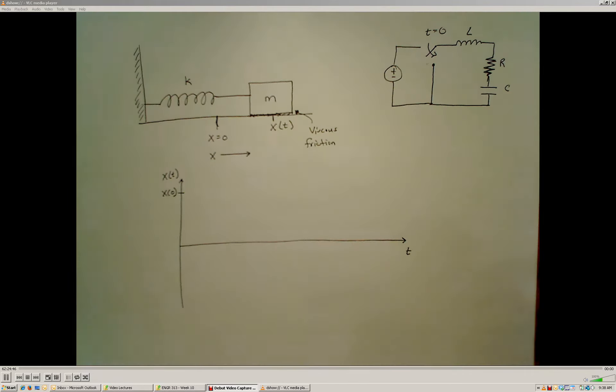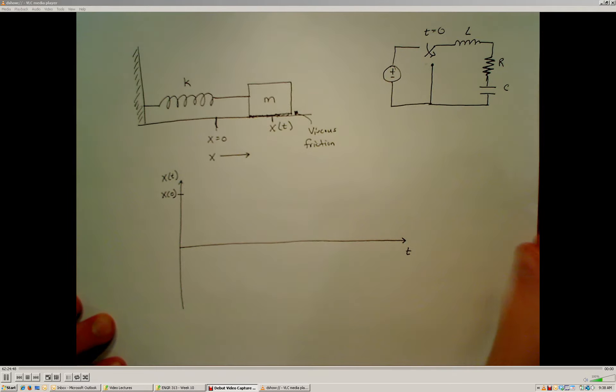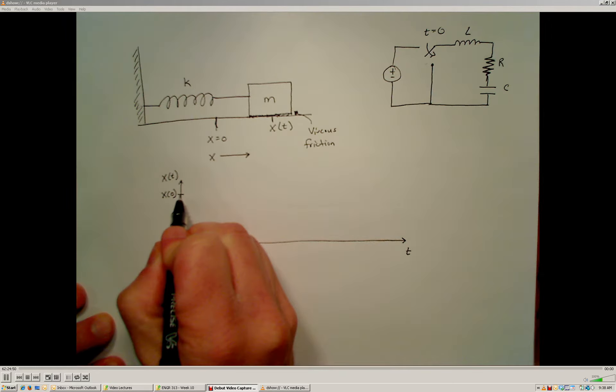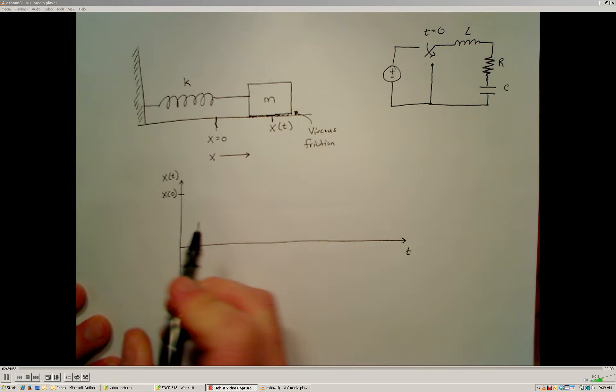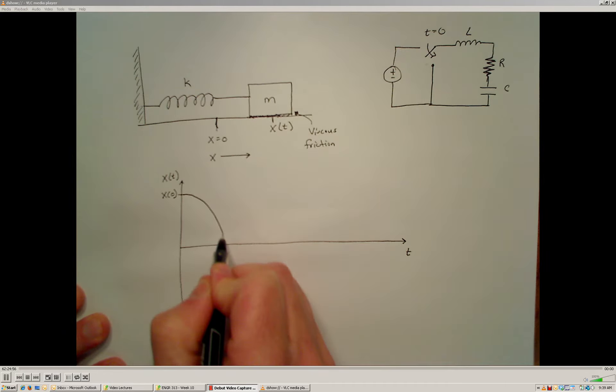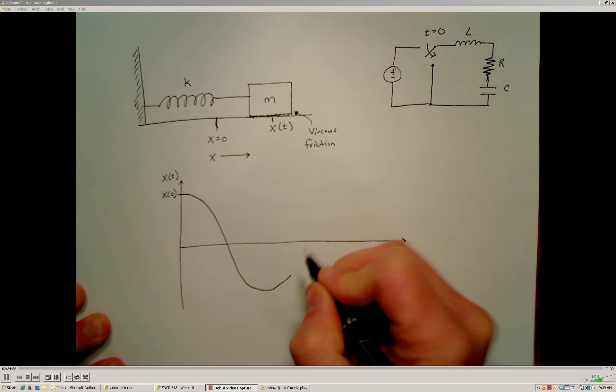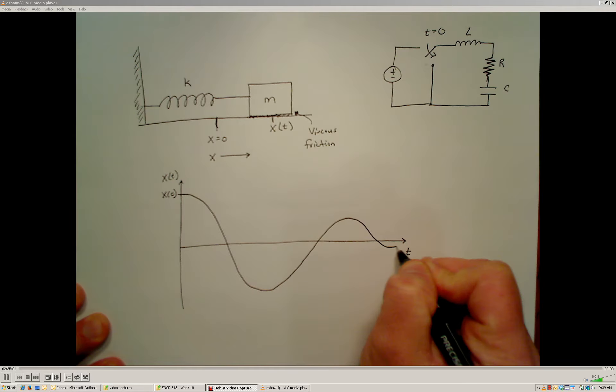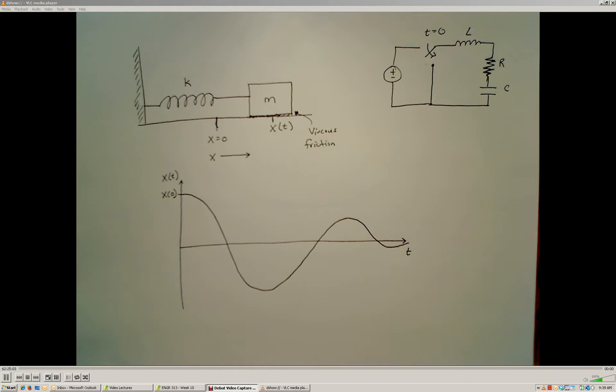From our experience with springs and masses, we would expect some type of oscillatory behavior where the mass is going to bounce back and forth around the equilibrium position until the viscous friction dissipates all the energy that's associated with that initial displacement. If I were to plot that on a graph, I would start at some initial displacement, and as time progresses after I release it, I would expect some sort of decaying cosine type of oscillation. That's one potential response behavior that we would see for the position of this mass.